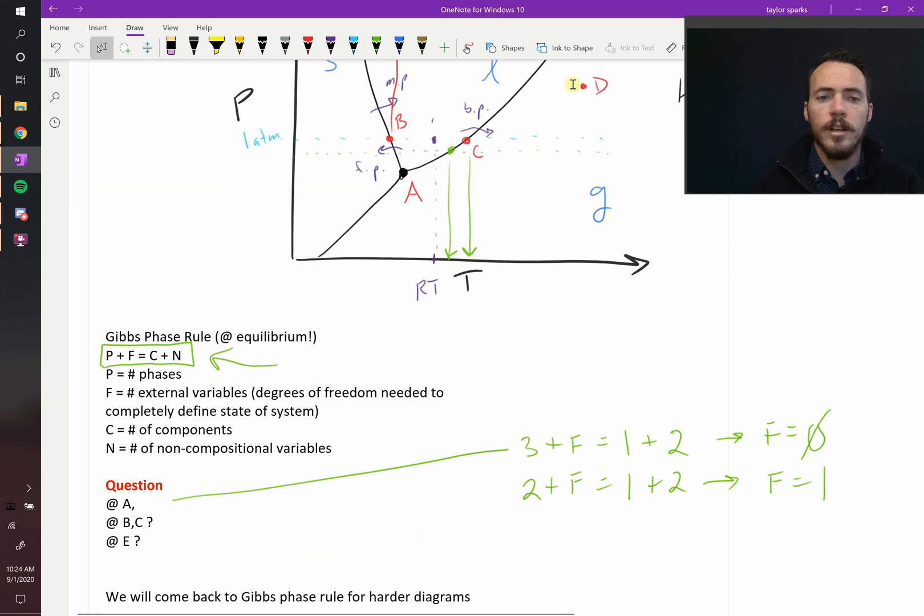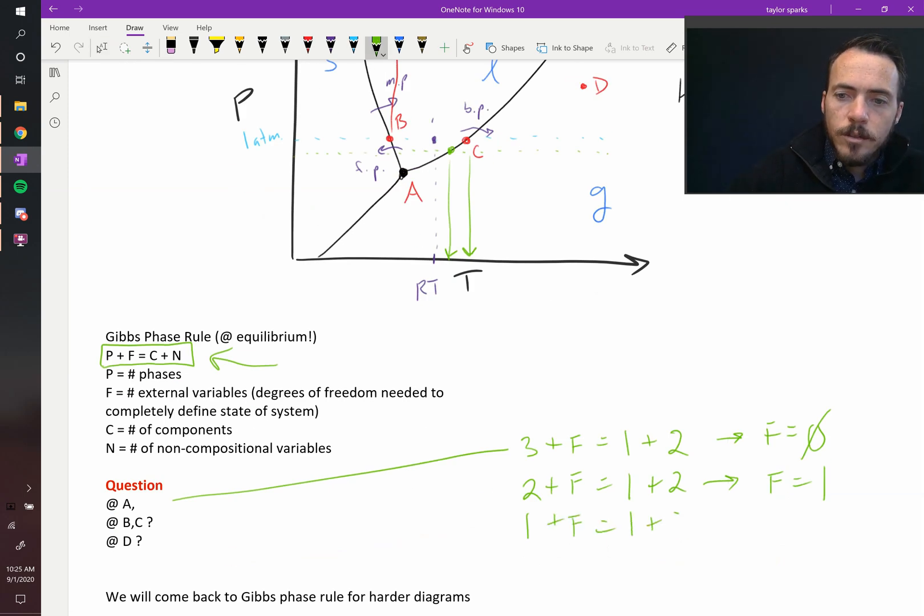Now let's do another one for point D. At point D, we've got one phase of matter plus F equals one plus two. So that means that we have two degrees of freedom.